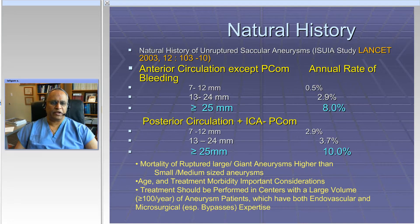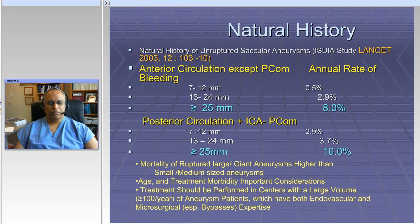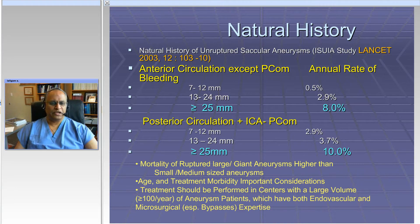When thinking about treatment of unruptured aneurysms, you have to consider the aneurysm features such as size and location, but also the patient's condition — the physiological age of the patient, expected longevity, and goals of treatment. Lastly, you need to think about the experience and expertise of the treating center. Ideally, a center treating complex aneurysms should have experience with...